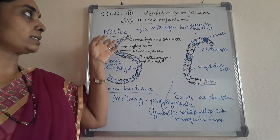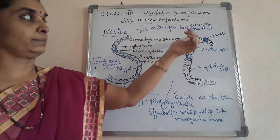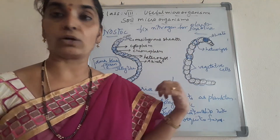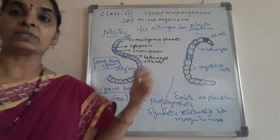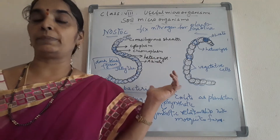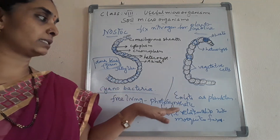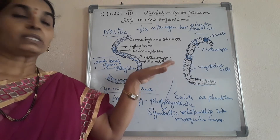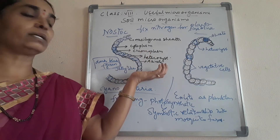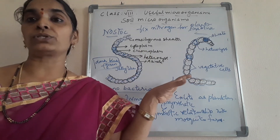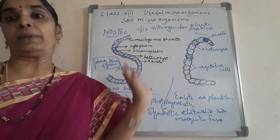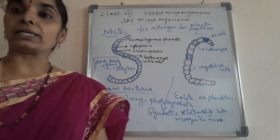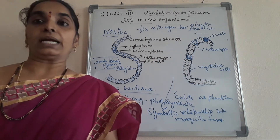Nostoc and Anabaena are microorganisms that both belong to the Cyanobacteria phylum. They exist in planktonic form and supply nitrogen to the plants. This is about the soil microorganisms which supply nitrogen in organic forms to the plants.